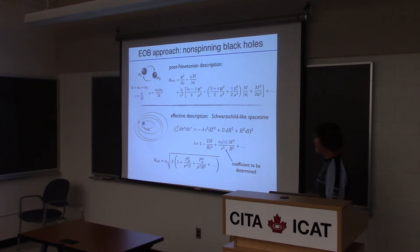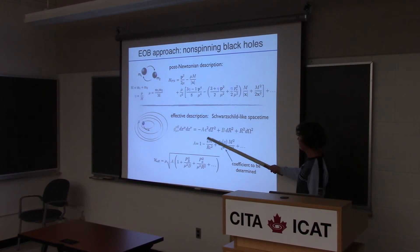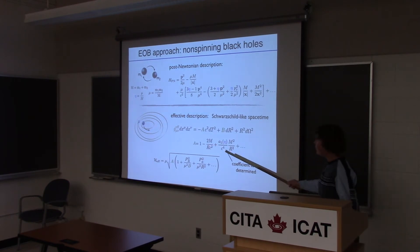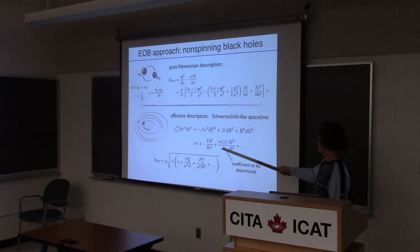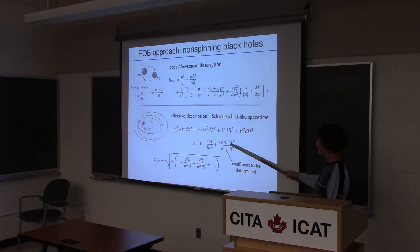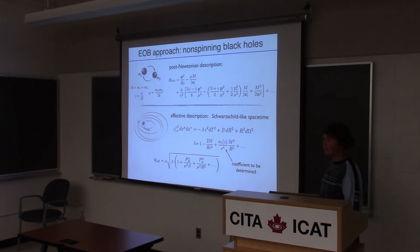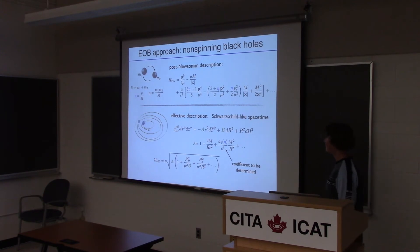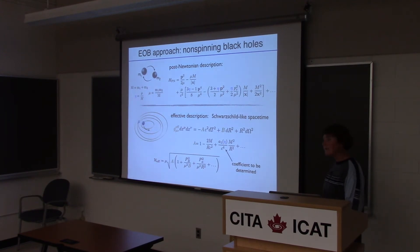In the test particle limit, we know what these potentials are. But we now want to describe comparable mass systems. So we just add a term that looks like a post-Newtonian expansion with some undetermined coefficient. The requirement on this coefficient is just that it has to vanish in the test particle limit so that we completely recover the Schwarzschild solution.